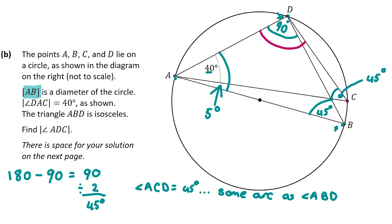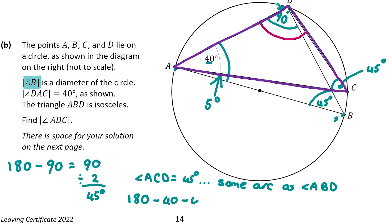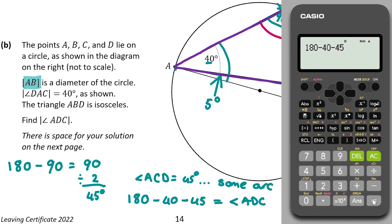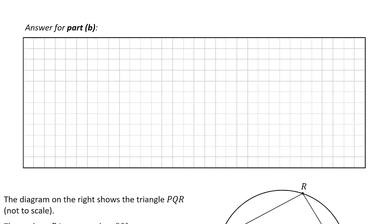Now we're close to finding angle ADC. Looking at the triangle formed, its angles must sum to 180 degrees. We have two of the three angles: 40 degrees and 45 degrees. So 180 minus 40 minus 45 equals angle ADC. That gives us 95 degrees. So angle ADC equals 95 degrees, and for this question you get a total of 10 marks.